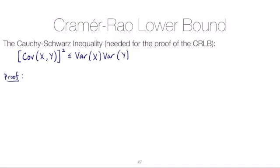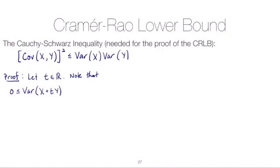The basic idea of this proof is to write down a quadratic function that we know will be greater than or equal to zero, and then use the minimum value — which will still be greater than or equal to zero — and plug in that minimum value to get the Cauchy-Schwarz inequality. We'll start with some variable t that is just a real number. We can note that the variance of X plus t times Y is greater than or equal to zero, since all variances are non-negative.